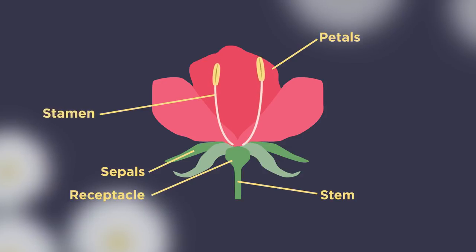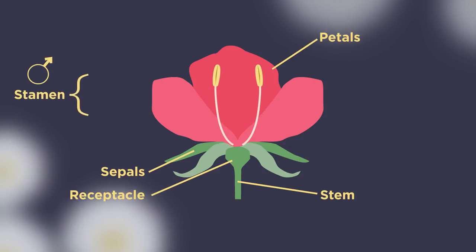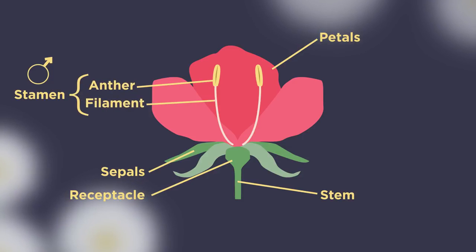The stamen is the male part of the flower. It consists of an anther, where pollen is produced, and the filament, which is the stalk that supports the anther. These structures are responsible for the production and positioning of pollen, the male gametes.